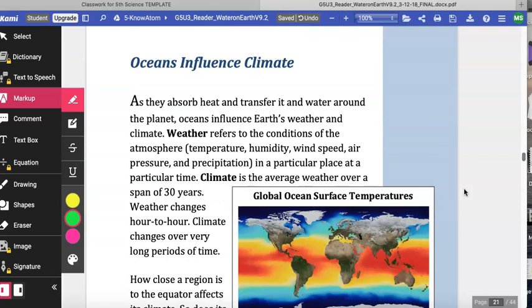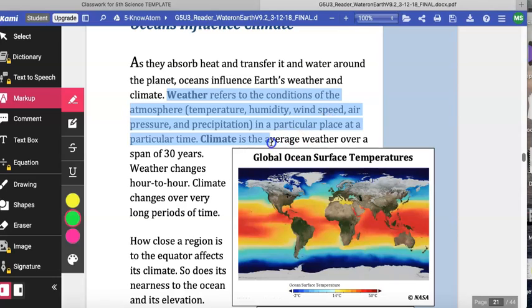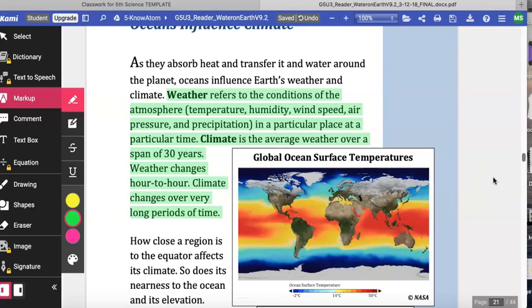Oceans influence climate. As they absorb heat and transfer it and water around the planet, oceans influence Earth's weather and climate. Weather refers to the conditions of the atmosphere—temperature, humidity, wind speed, air pressure, and precipitation—in a particular place at a particular time. Climate is the average weather over a span of 30 years. Weather changes hour to hour, minute to minute. Climate changes over very long periods of time.